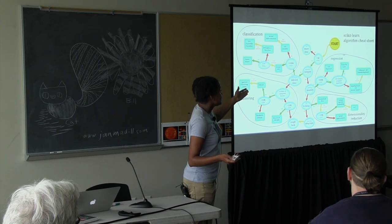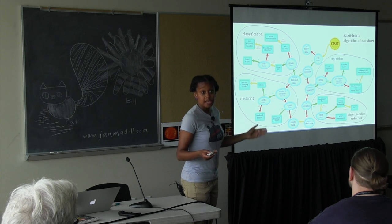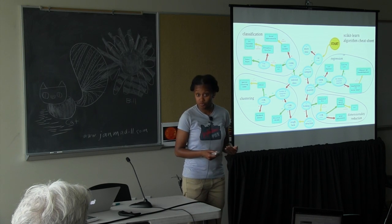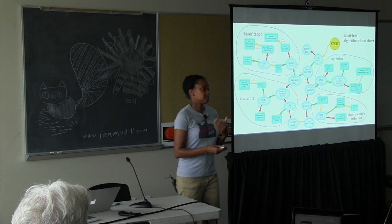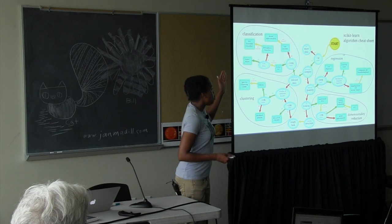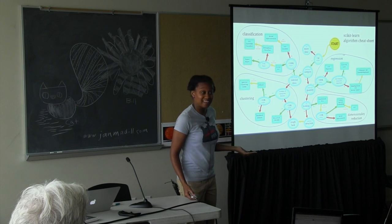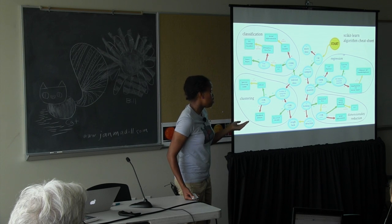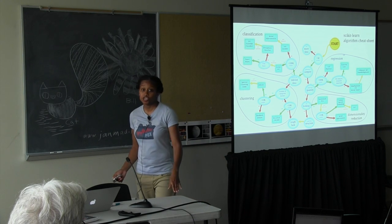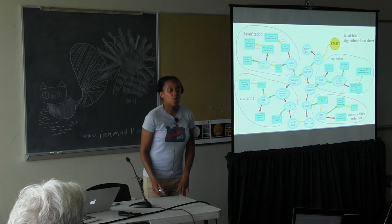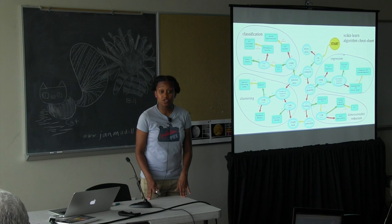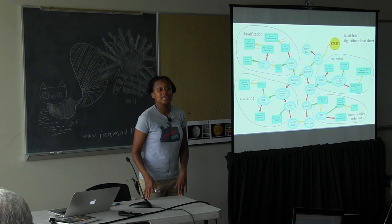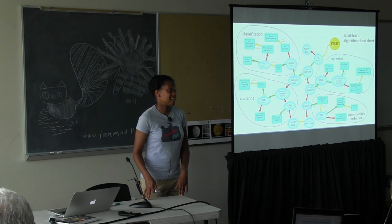This is the scikit-learn algorithm cheat sheet — a roadmap and guide showing you which algorithms are useful for which problem you're trying to solve. Taking a step back, you can figure out what kind of problem you have. Do you have a classification problem? A clustering problem? Is it a regression problem? Or do you have a dimensionality reduction issue — too many features? Once you figure out what type of problem you have, you can start experimenting with different classifiers and algorithms.